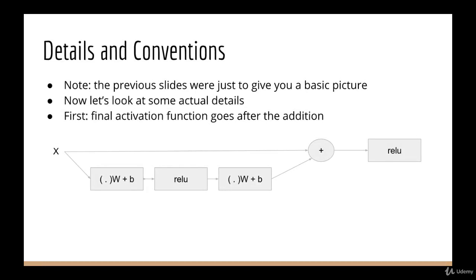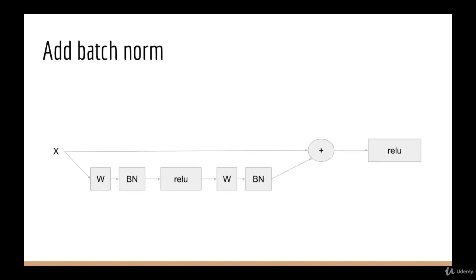Now onto some details and conventions. The previous slides were just meant to give you a basic overview. But now that you understand the concept, we can move on to the details. The first detail that isn't obvious from the usual diagrams that people show you, is that the final activation function actually goes after adding the shortcut branch to the main branch. So you see here we have two ReLUs, but the second ReLU comes after the plus. Another addition is that the authors also apply batch norm to each layer in the main branch. So recall that batch norm also comes before the activation function. So you have the weight matrix, batch norm, ReLU, weight matrix, batch norm, add it to x, and then the second ReLU.